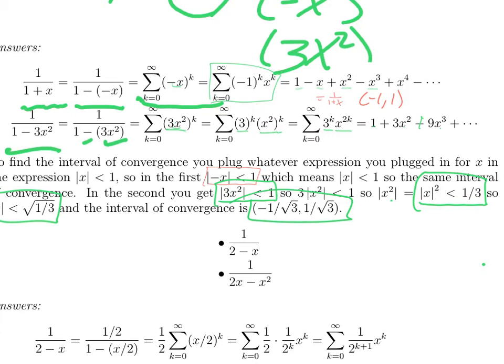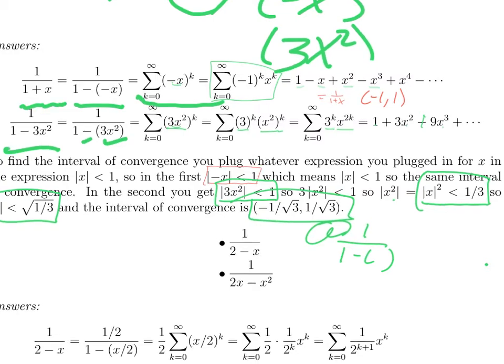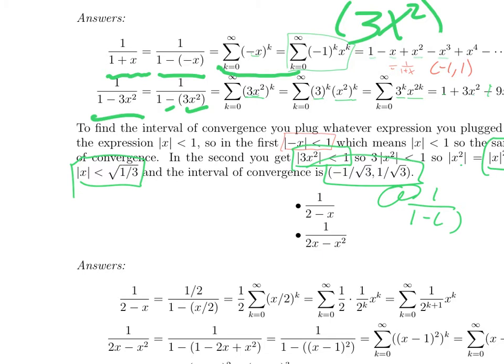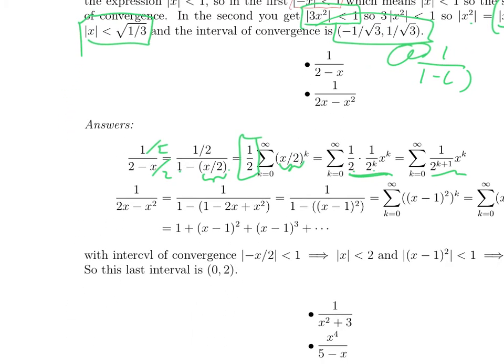And then finally, you can kind of combine those two. Your goal is always to try and make this expression look like 1 over 1 minus something with maybe some other stuff out here. So if you see 1 over 2 minus x, you're missing the 1 minus. So we divide top and bottom by 2. So we get 1 half over 1 minus x over 2. So that becomes 1 half. That's a constant outside. The quantity that we originally called x is now x over 2. Bring the half inside. And then x to the k over 2 to the k. Combine common base different exponents. We get 1 over 2 to the k plus 1 times x to the k.